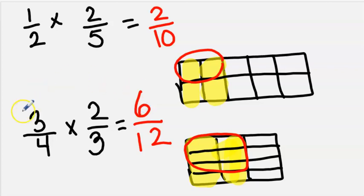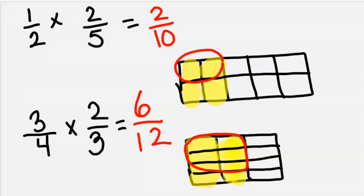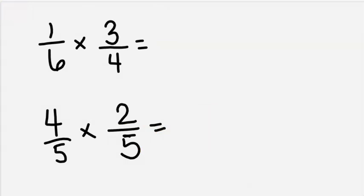Let's see if that works with our rule — multiplying numerator times numerator and denominator times denominator. Three times two equals six, and four times three equals twelve. That does work! Because it might not be efficient to draw a model every time, we know from our rule that we can multiply the numerator times the numerator and the denominator times the denominator.